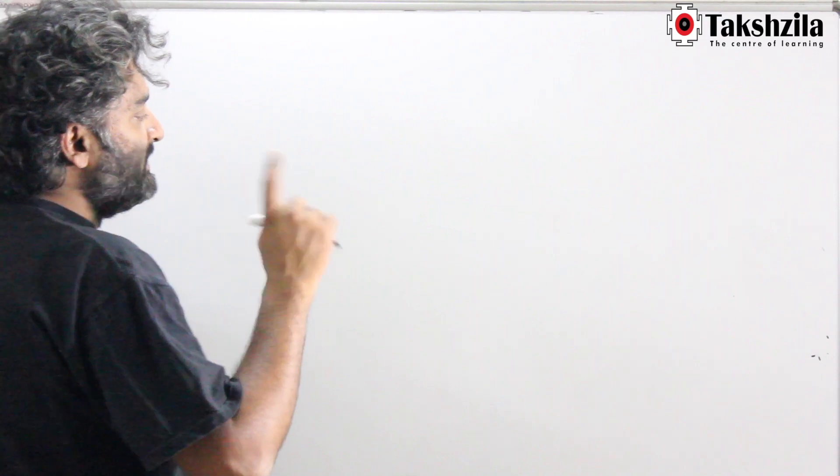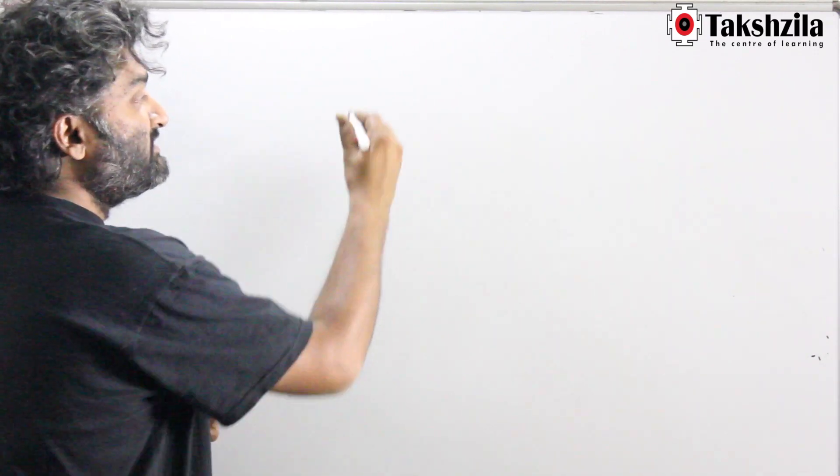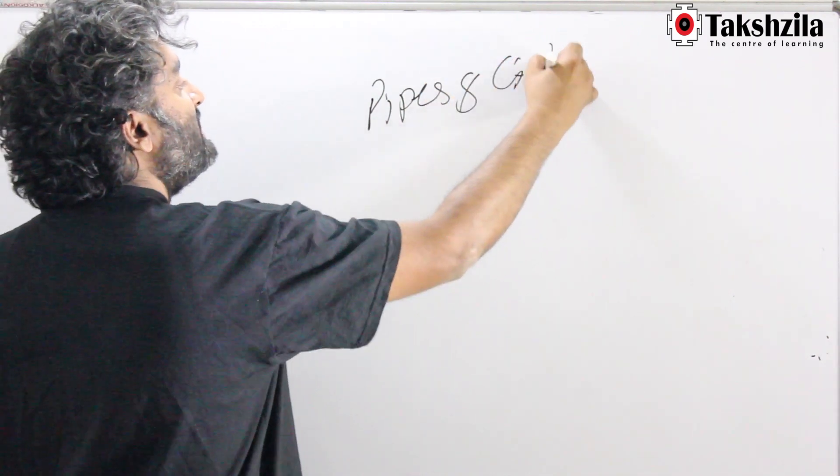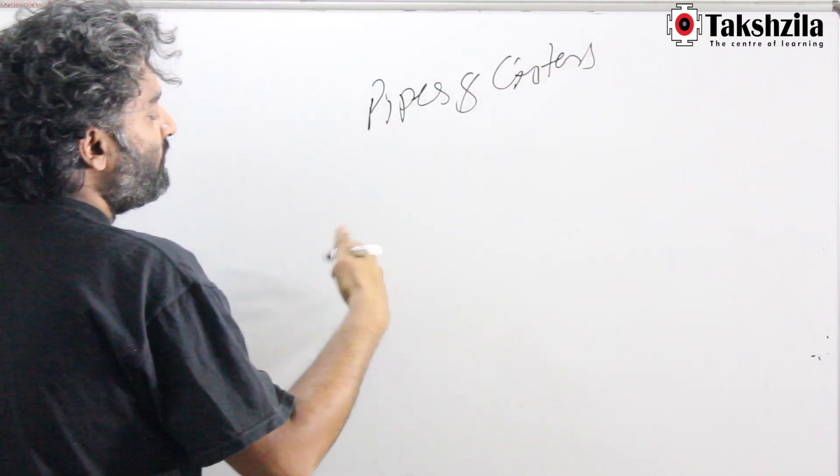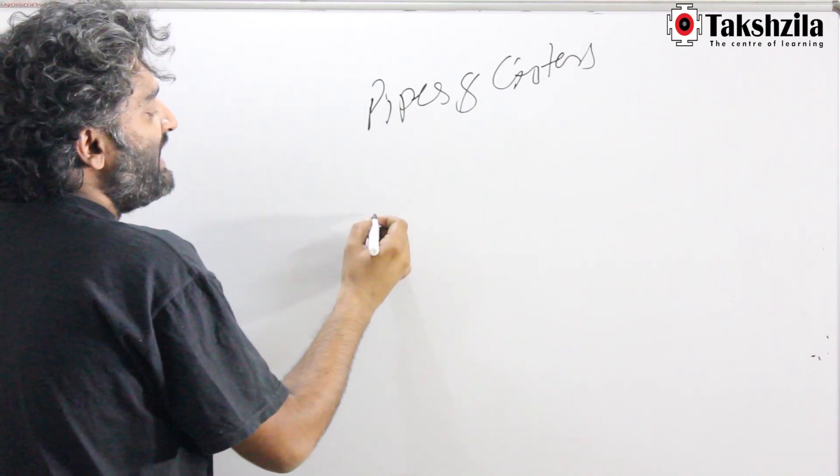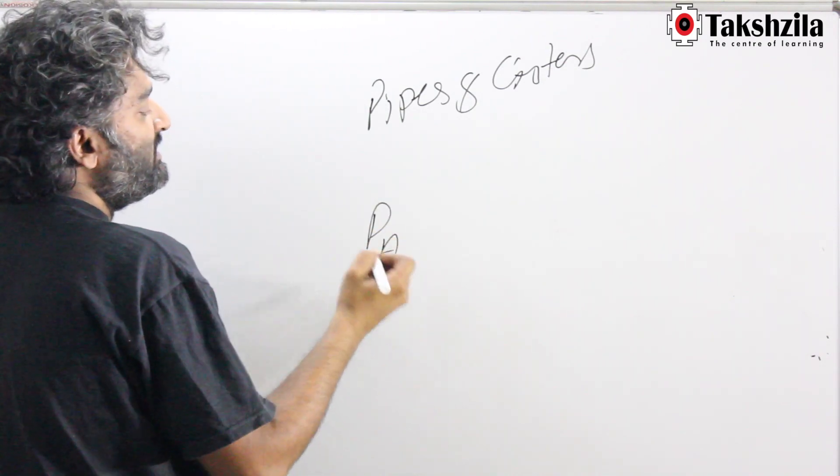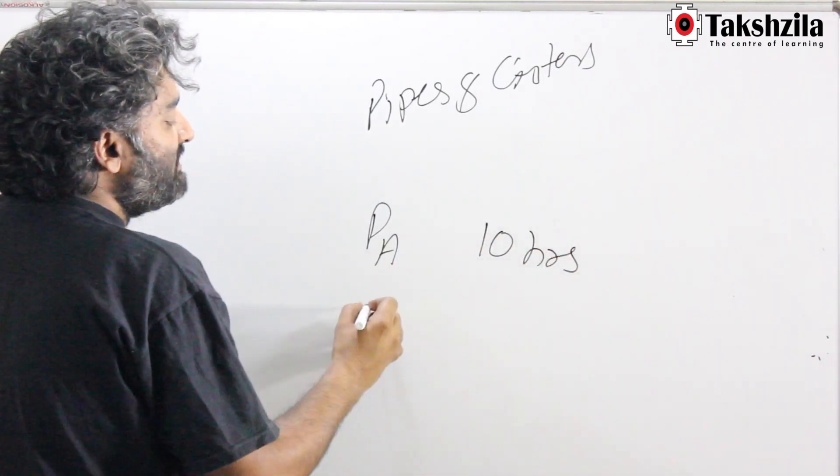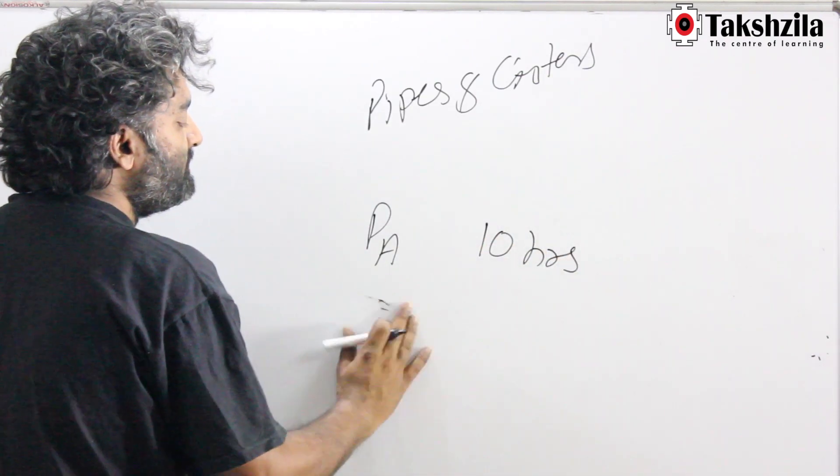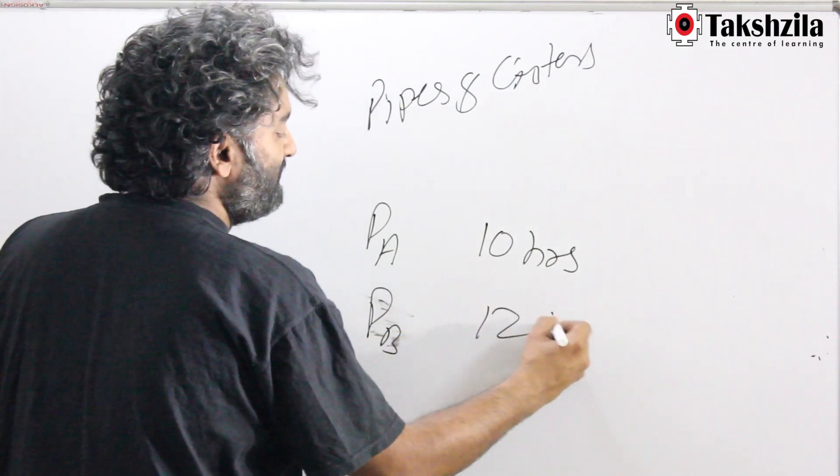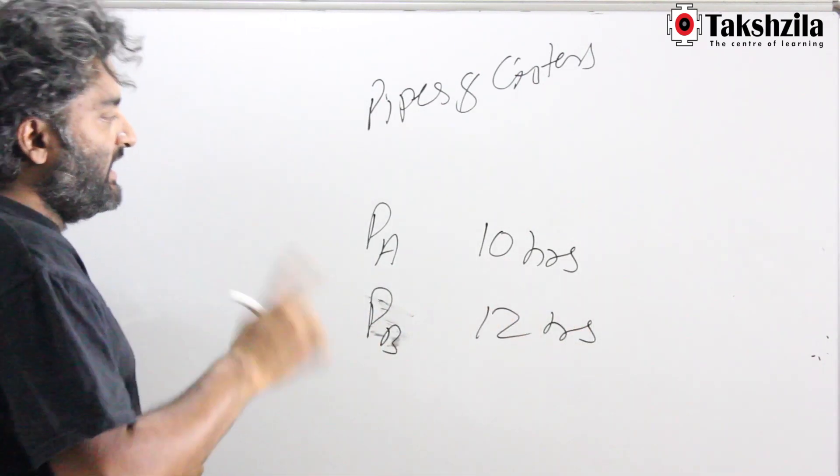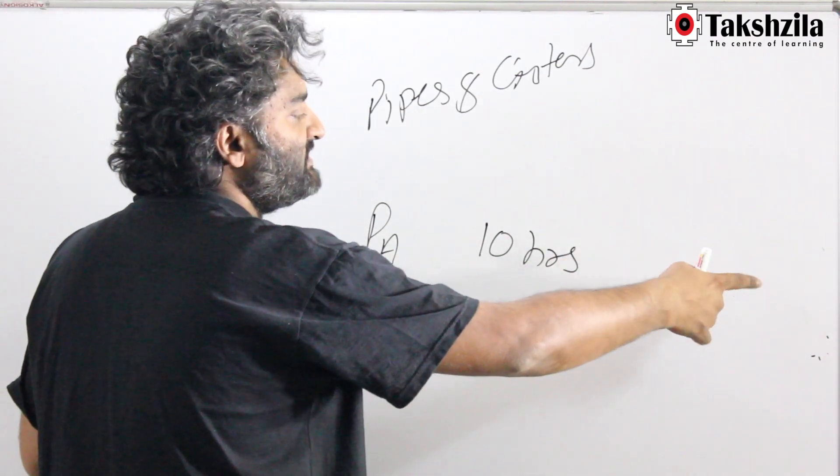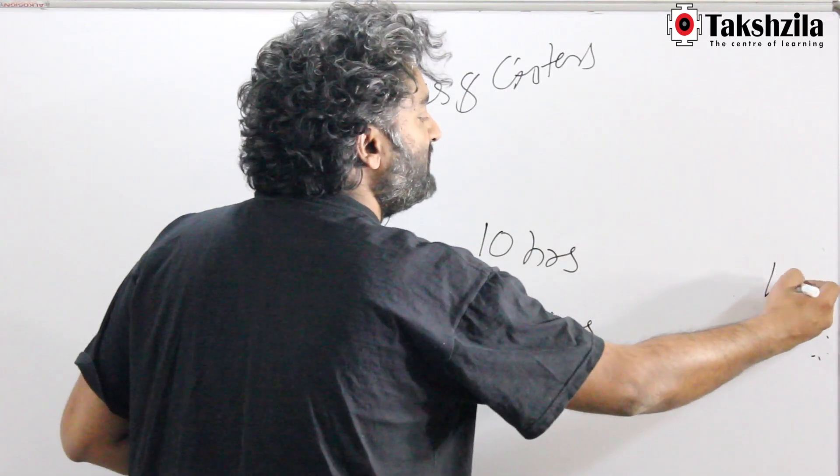An idea that we would want to introduce early is that the so-called topic of pipes and cisterns is the same as time and work. For example, I could say pipe A can fill a tank in 10 hours, pipe B can fill the same tank in 12 hours. Hit pause here, think about it. It is the same question.